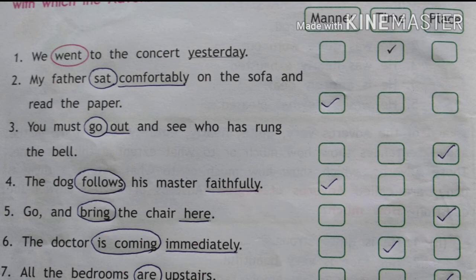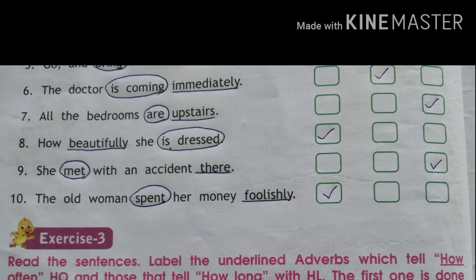Seventh: all the bedrooms are upstairs — are where? Upstairs — adverb of place. Eighth: how beautifully she is dressed — is dressed how? Beautifully — adverb of manner. Ninth: she met with an accident there — met where? There — adverb of place. Tenth: the old woman spent her money foolishly — spent how? Foolishly — adverb of manner.